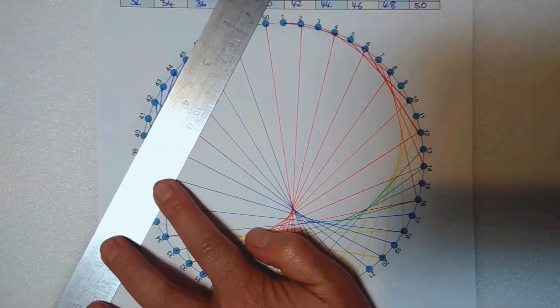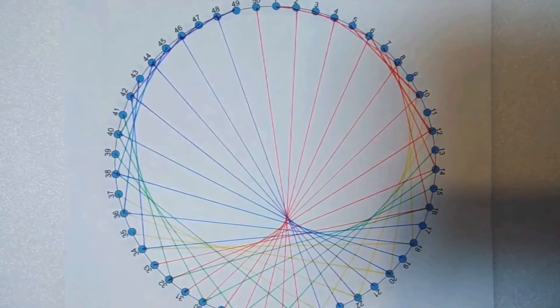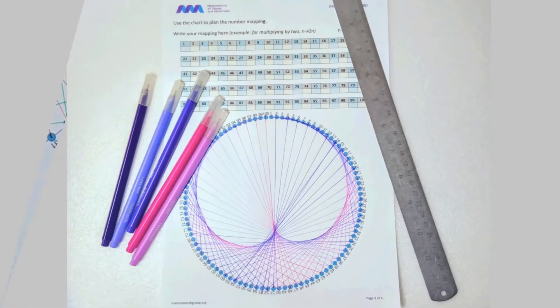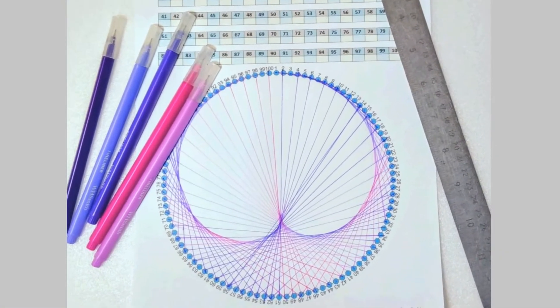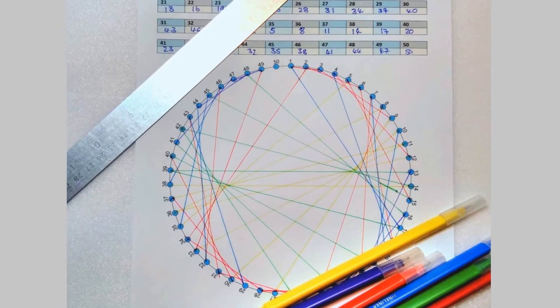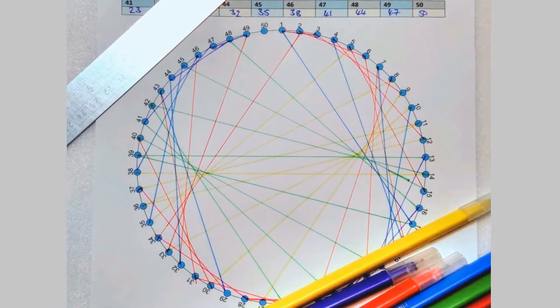The last line connects 49 to 48. Your beautiful cardioid is finished. Here is one made with 100 points. Here is a nephroid made by mapping n to 3 times n.